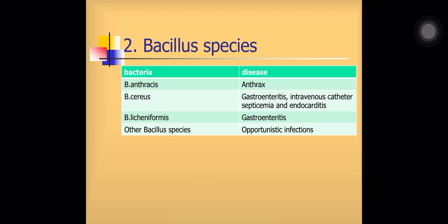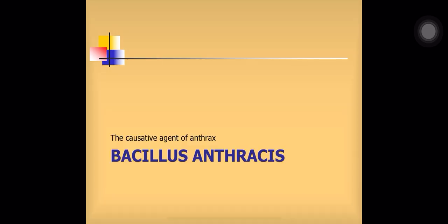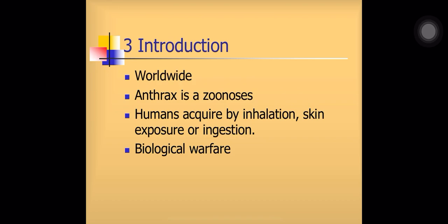The major species in the genus include Bacillus anthracis which causes anthrax, Bacillus cereus which causes gastroenteritis and other diseases, Bacillus licheniformis which causes gastroenteritis, and other Bacillus species which cause opportunistic infections. The causative agent of anthrax is Bacillus anthracis. Anthrax is a zoonotic disease.